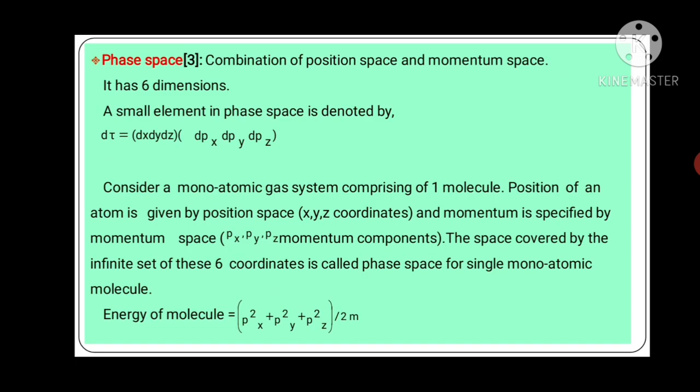Consider a monatomic gas system comprising of one molecule. Position of the atom is specified by position space, by x, y, z coordinates. And its momentum is specified by momentum space means momentum components px, py, pz. The space covered by infinite set of six coordinates is called phase space for a single monoatomic molecule. Energy of the molecule is px² + py² + pz² upon 2m.